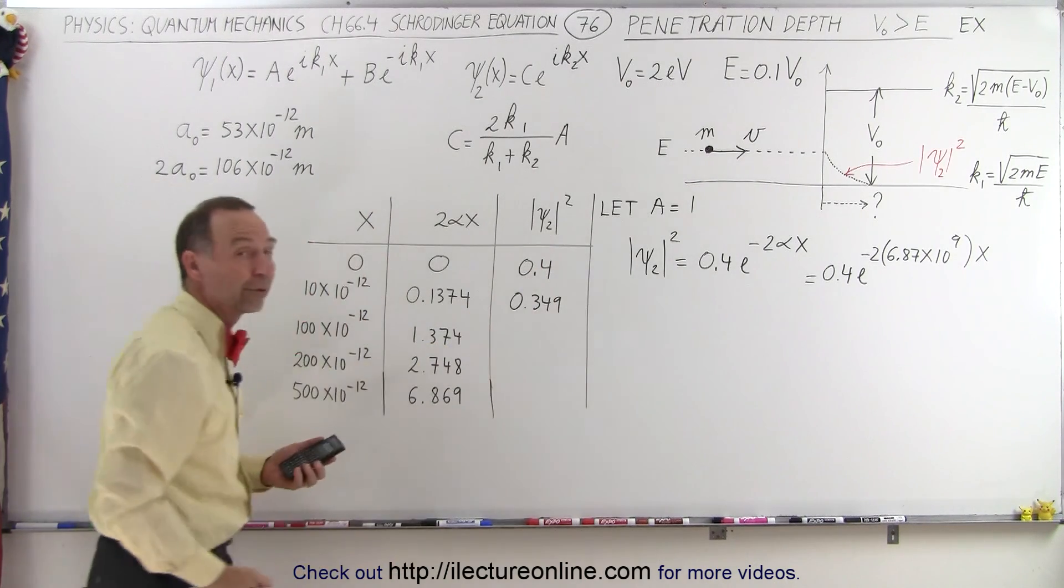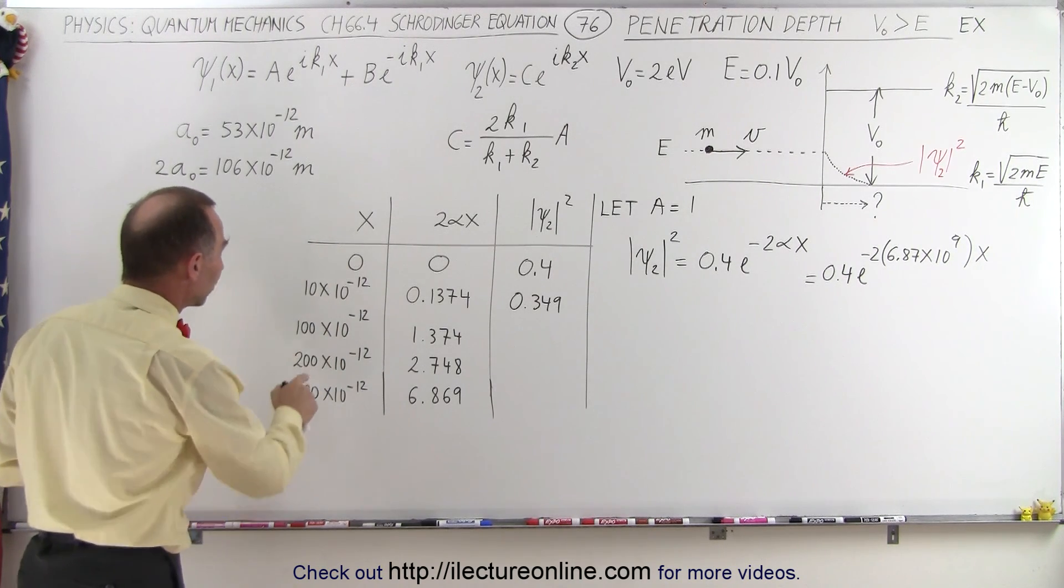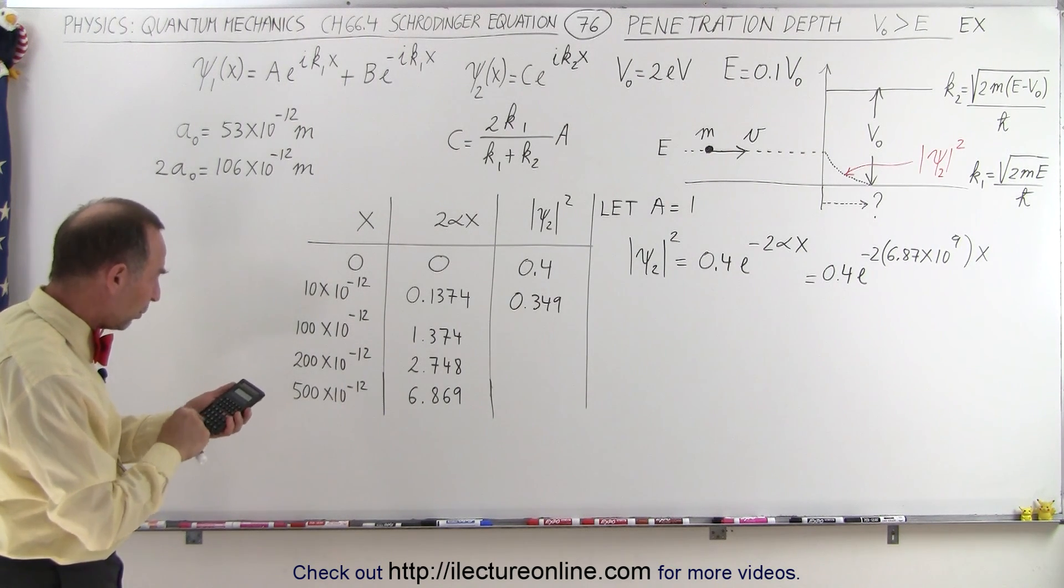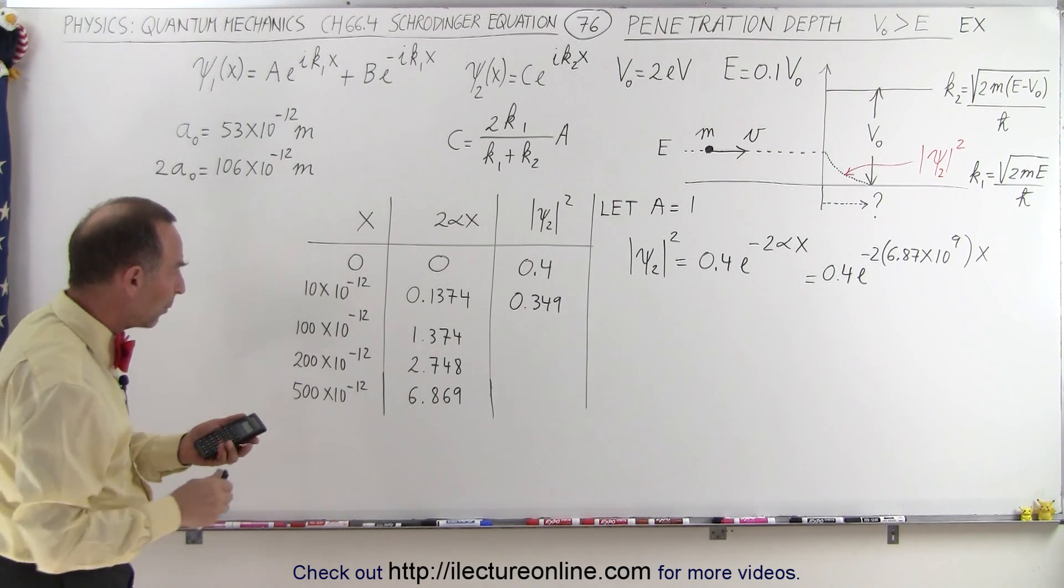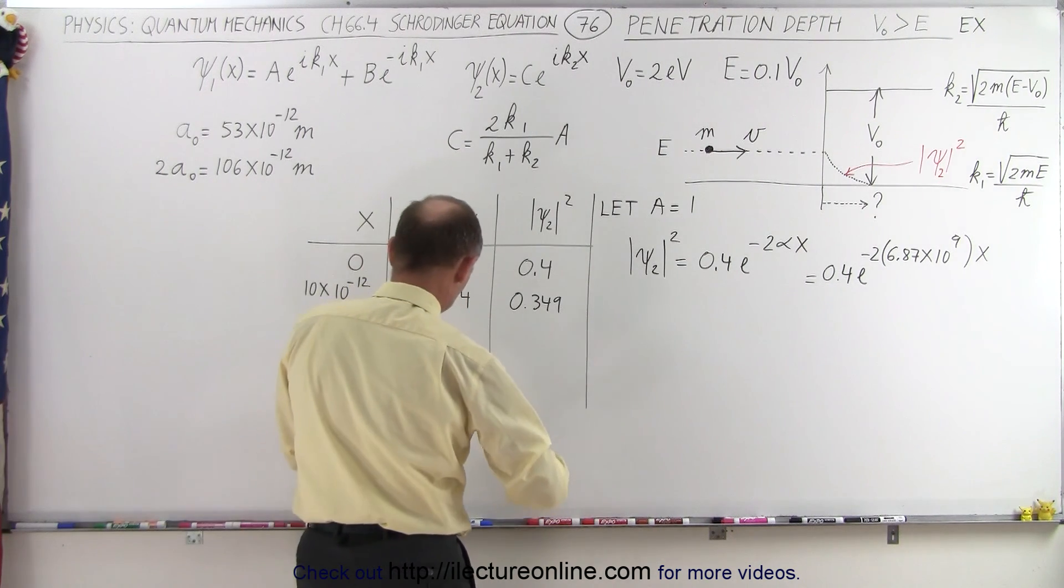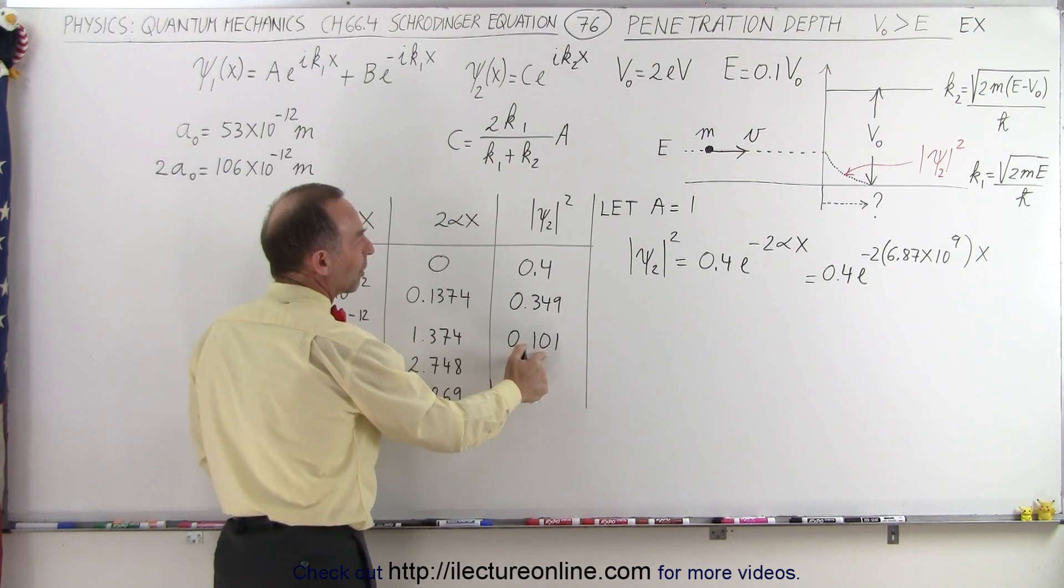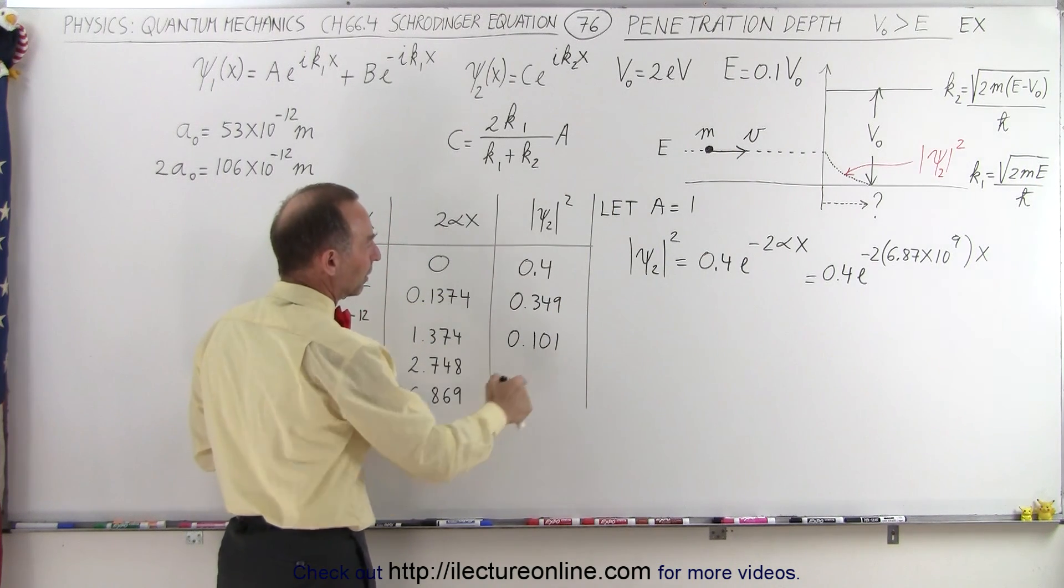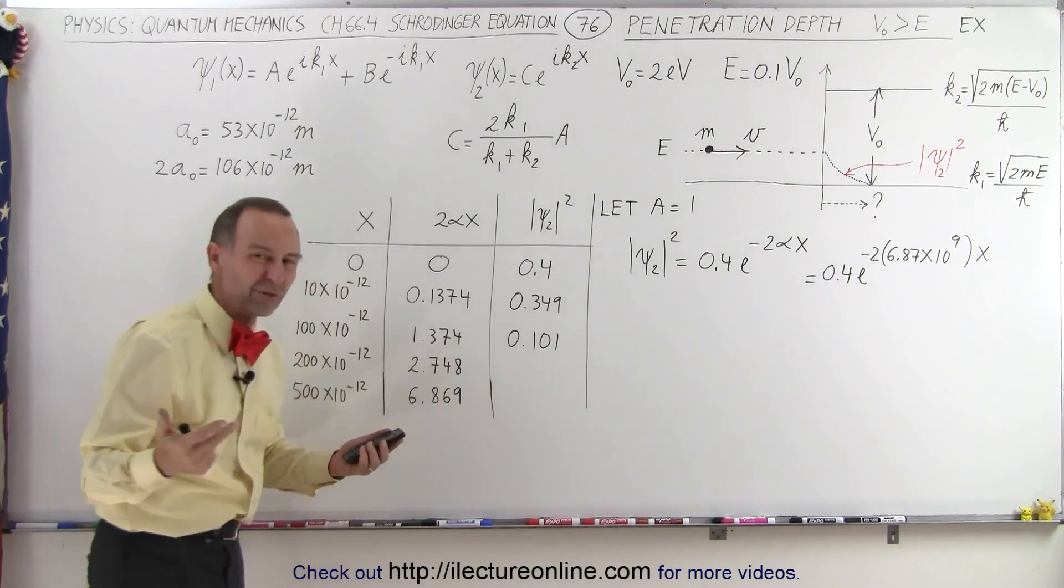So now that means the probability of making it that far is fairly high compared to the 0.4 value. Now let's go 10 times as far, 100 times 10 to the minus 12, which is 0.1 nanometers, roughly an atom diameter. We get 1.374, put the negative in front of that, make that the exponent, and multiply times 0.4. Now we're down to 0.101. In other words, we have about a 25% probability for any particle entering the barrier that the particle will get that far, about one atom diameter.